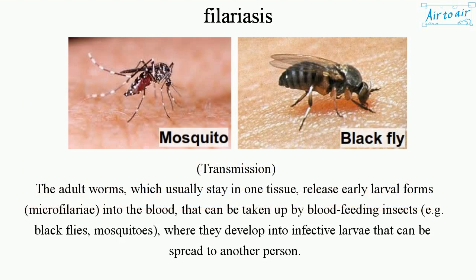Transmission. The adult worms, which usually stay in one tissue, release early larval forms — microfilariae — into the blood, that can be taken up by blood-feeding insects, e.g. black flies and mosquitoes, where they develop into infective larvae that can be spread to another person.